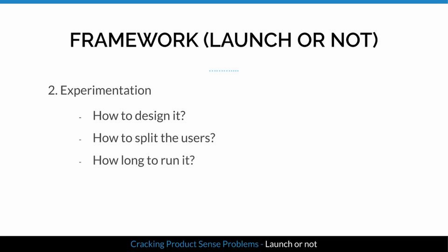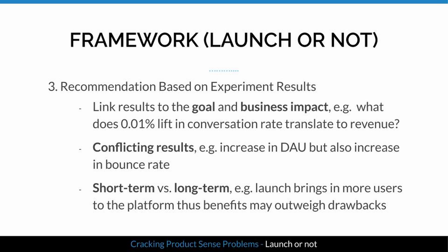Then discuss how you'd design an experiment: how to randomly split users into control and treatment groups, and how long to run it. Make recommendations on whether to launch based on experiment results, always linking results to the initial goal and business impact — for example, what does a 0.1% increase in conversion rate translate to in revenue? Is it worth launching given all the costs? The ideal scenario is that success metrics increase and the guardrail metric remains unchanged, but that doesn't happen often.